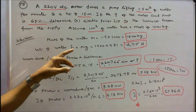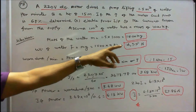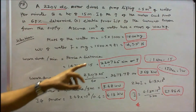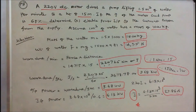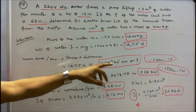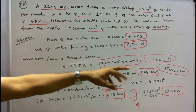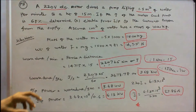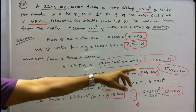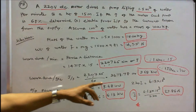Weight of water is equal to M into G: 1500 into 9.81, that is equal to 14,715 Newton. Work done per minute is equal to force into distance, distance is 15 meters. Therefore 14,715 into 15, that is equal to 2,20,725 Newton-meter or joules. Output power is equal to work done per second: 2,20,725 divided by 60, that is equal to 3.68 kilowatts.